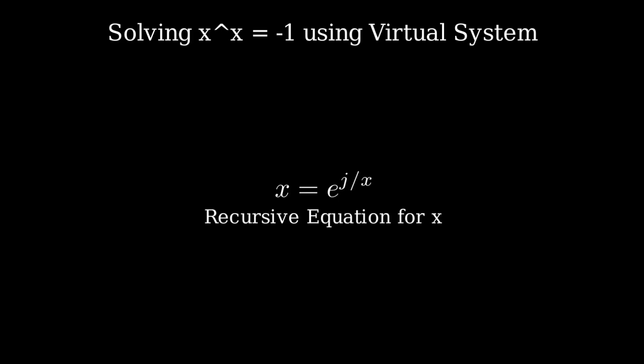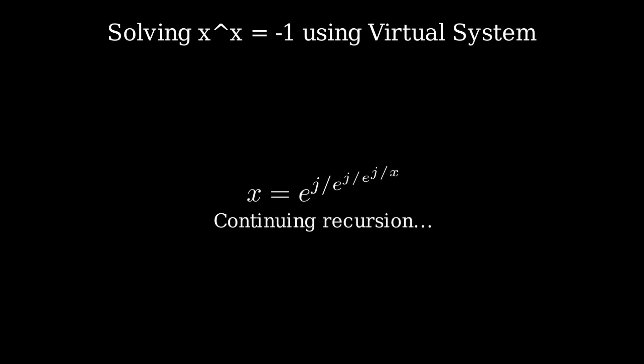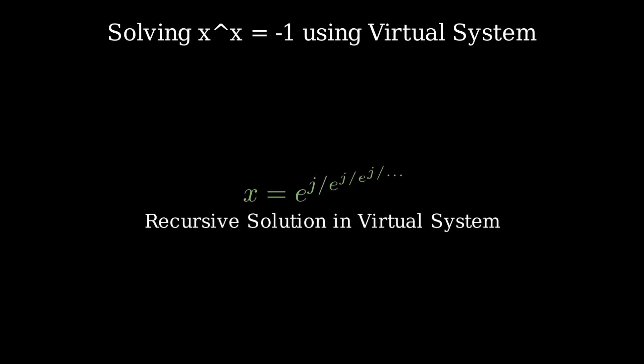But here's something interesting — this creates a recursive structure. If we substitute x back into itself, we get x equals e raised to the power of j divided by e raised to the power of j divided by x. And continuing this process, x becomes an infinite recursive exponential: e raised to the power of j over e raised to the power of j over e raised to the power of j, and so on. This type of recursion gives us a single well-defined solution — something the complex system couldn't provide. But can we express it in a cleaner closed form? Let's find out.